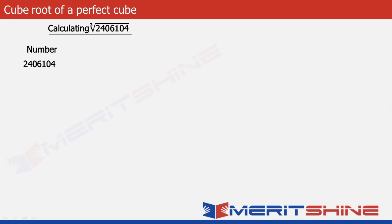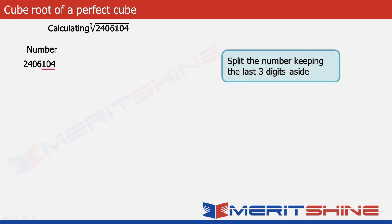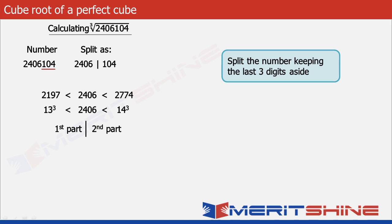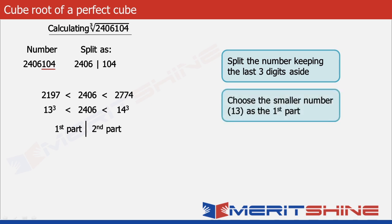The first step would be to split the number keeping the last three digits aside. So we'll get 2406 in the first part and 104 in the second. We observe that 2406 lies between 2197 which is 13 cubed and 2744 which is 14 cubed. The answer would be in two parts. The first part gives the number whose cube is smaller, which in our case is 13.